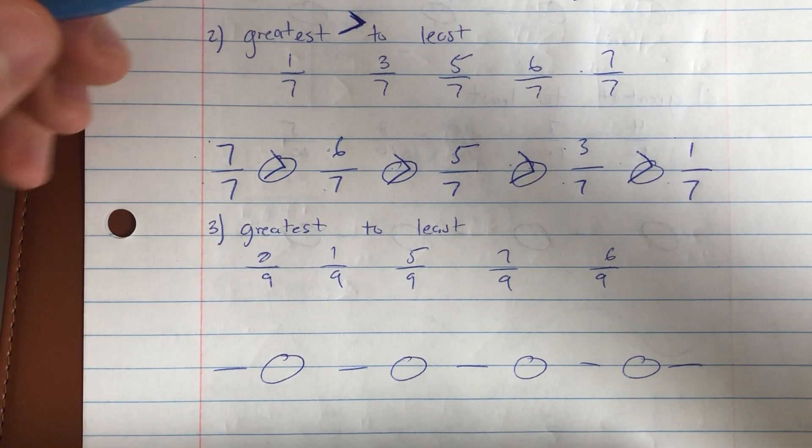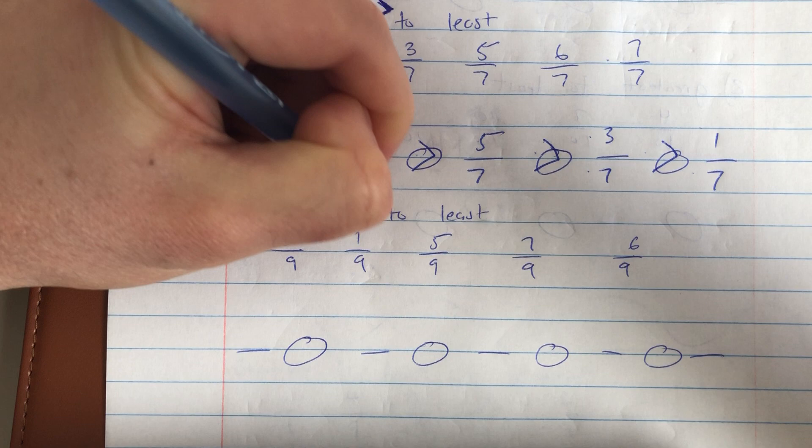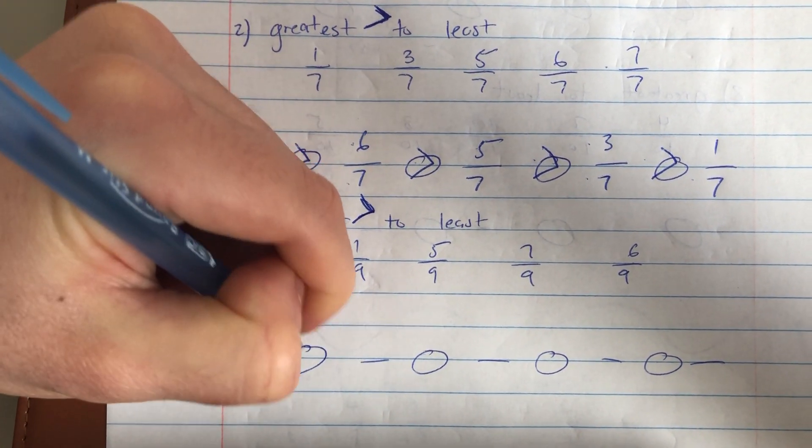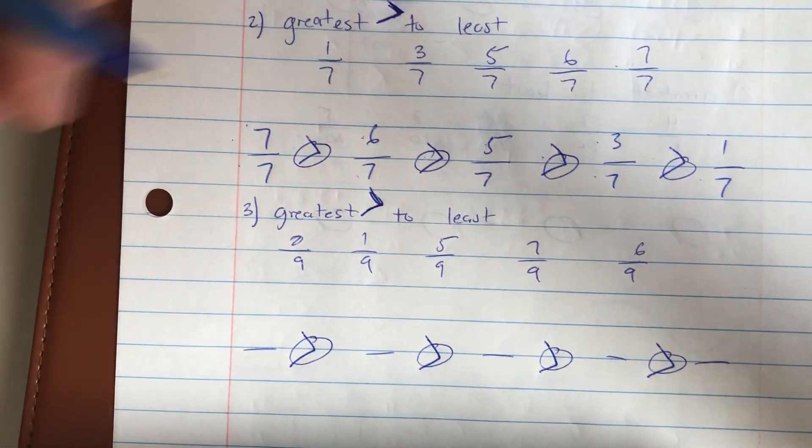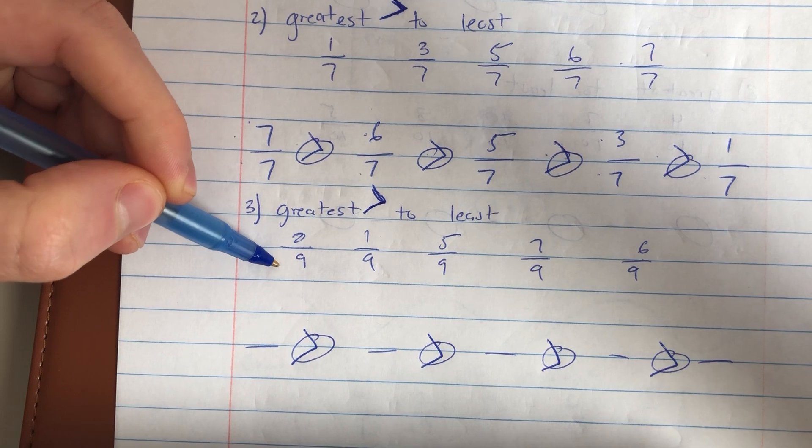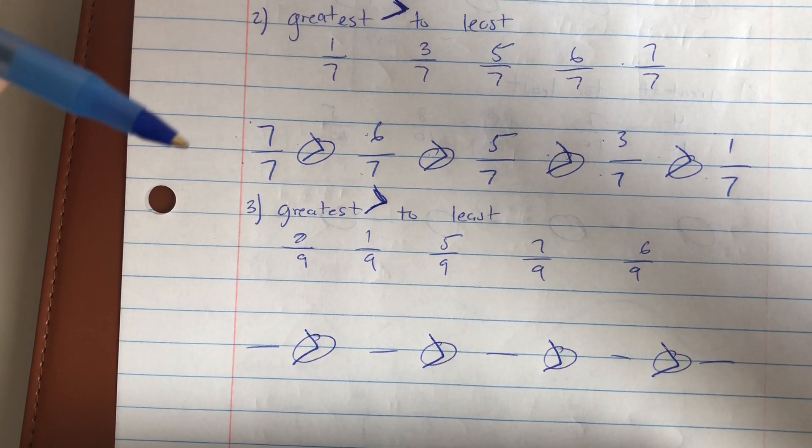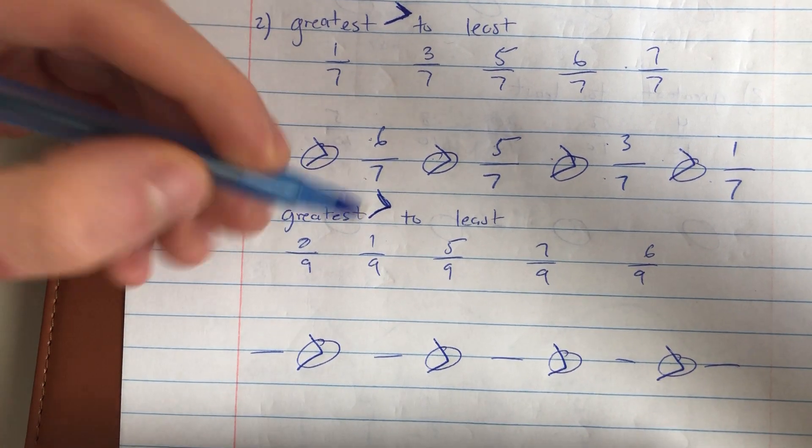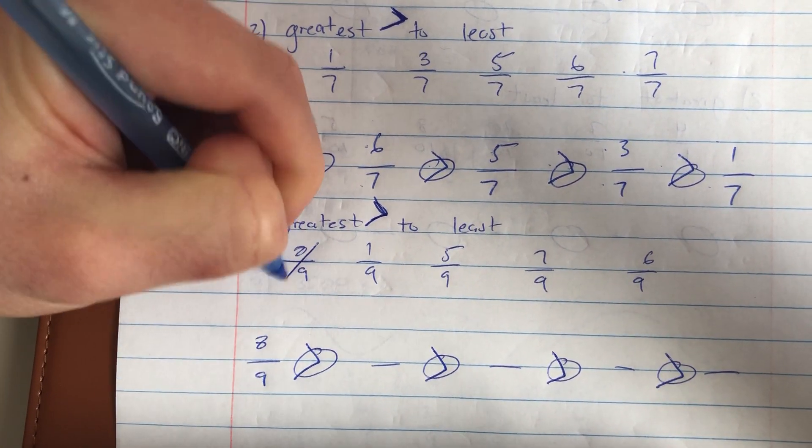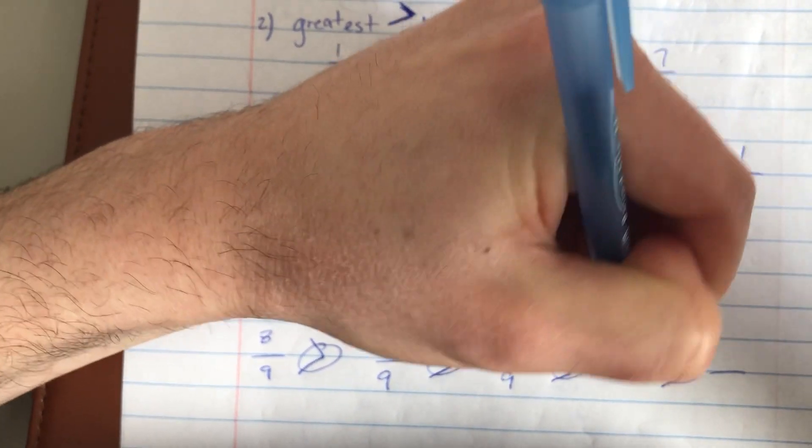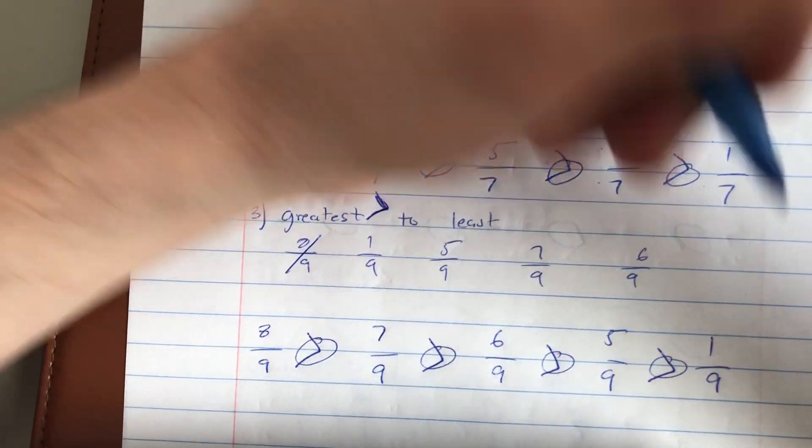Moving on to number three, greatest to least, so my gator eats the greater. And I make sure that's the same for every part of my inequality statement. I know that the denominators are all 9, so I'm looking for my greatest fraction first, which is the largest numerator. The largest numerator is 8/9, followed by 7/9 is greater than 6/9 is greater than 5/9 is greater than 1/9.